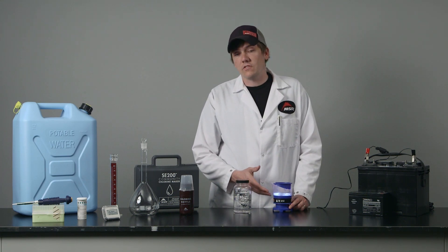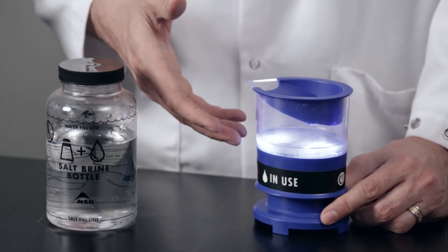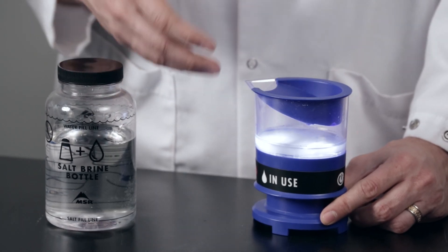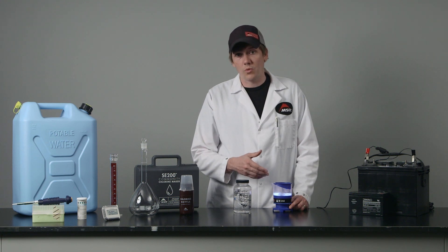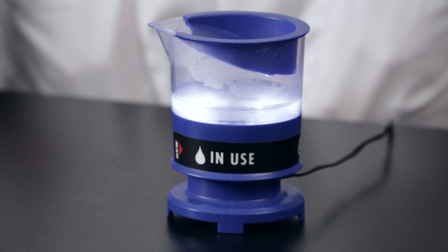As the electrolysis process begins, you're going to see bubbles forming and the light is going to continue to stay on white for five to seven minutes until the system is done running, at which point it will beep and you will know that you've successfully prepared your chlorine solution.